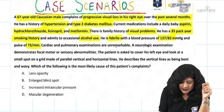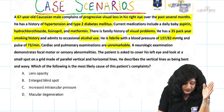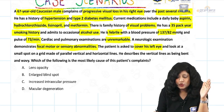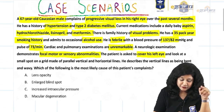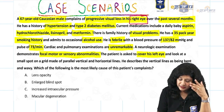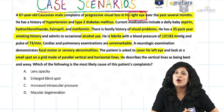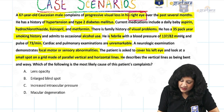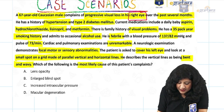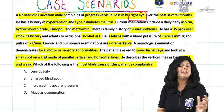Cardiac and pulmonary examinations are unremarkable. Neurological examination shows no focal motor or sensory abnormalities. The patient is asked to cover his left eye and look at a small spot on a grid made up of parallel vertical and horizontal lines. He says that the vertical lines appear bent or wavy. Which of the following is the most likely cause of this patient's complaint?